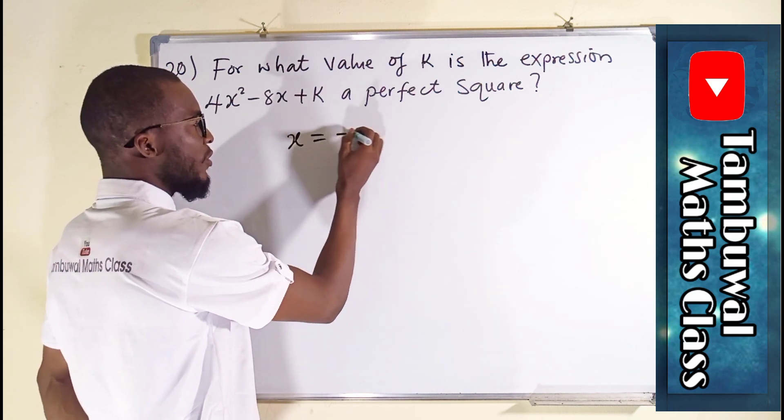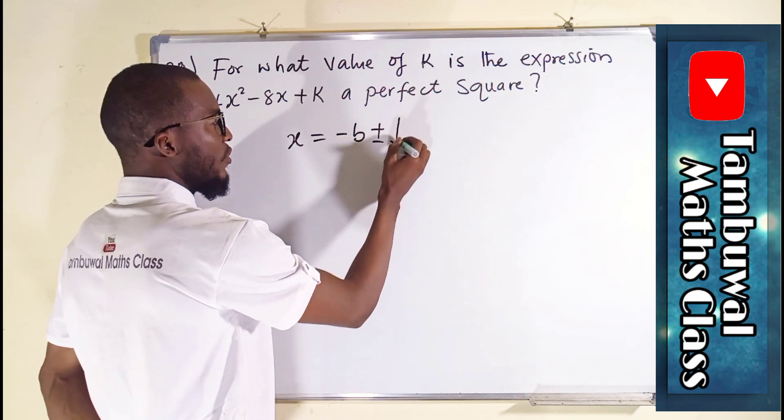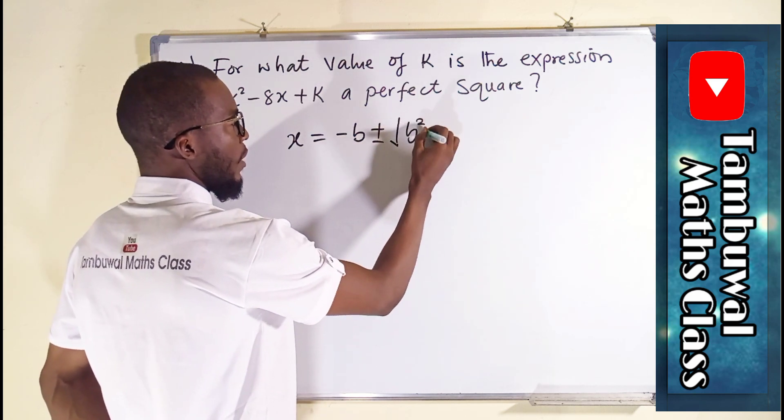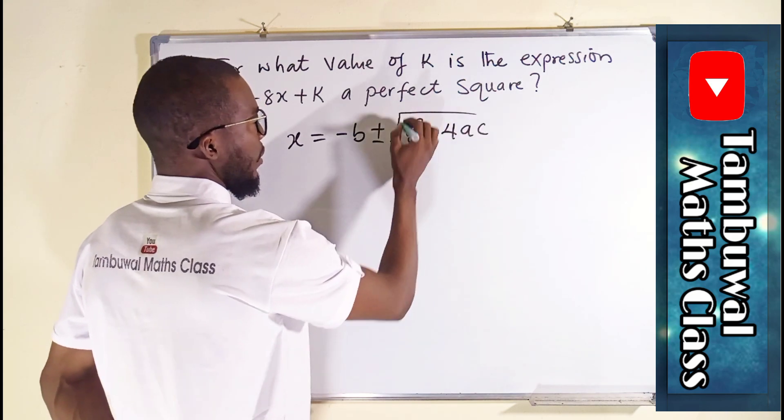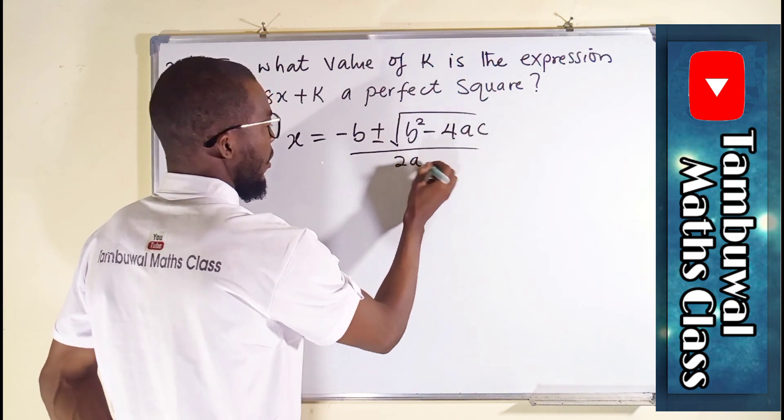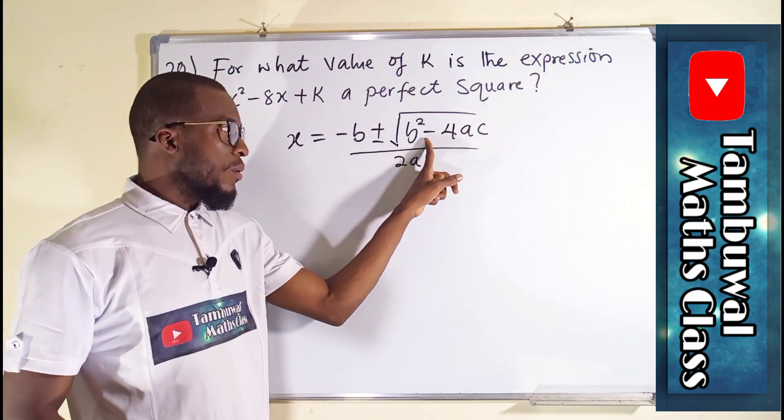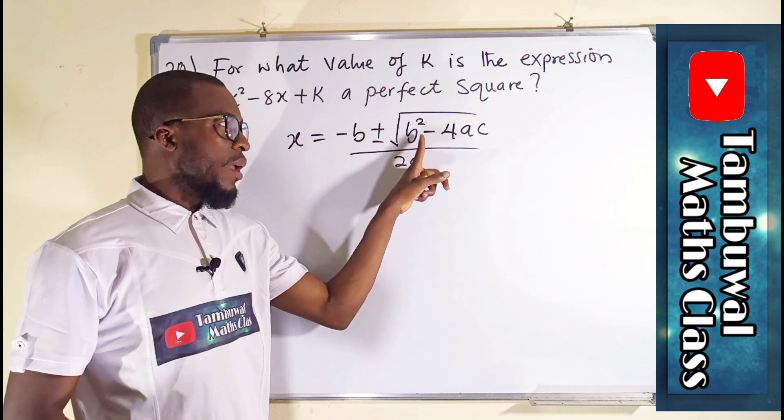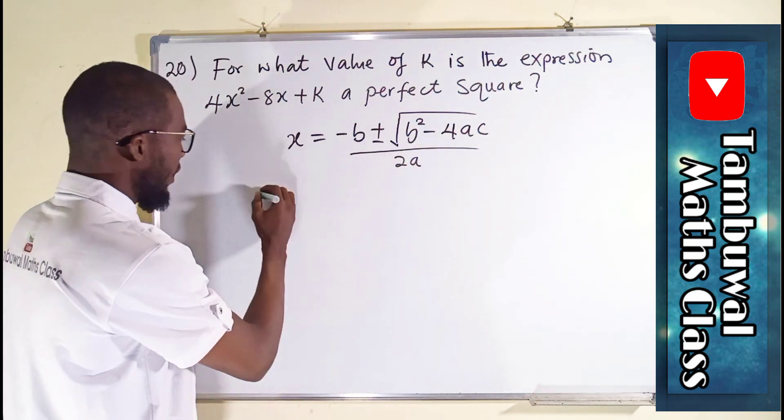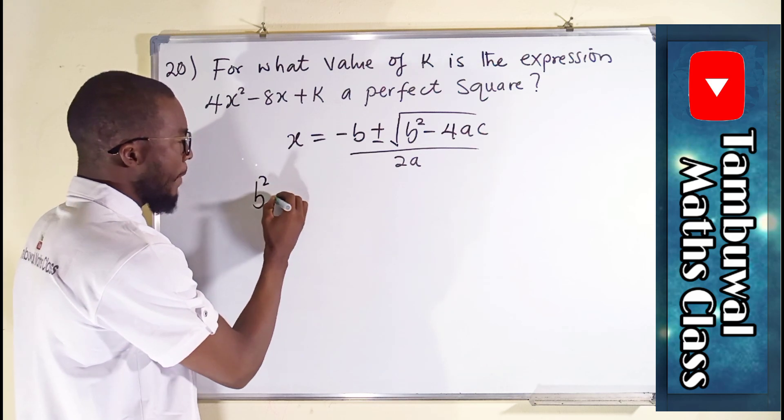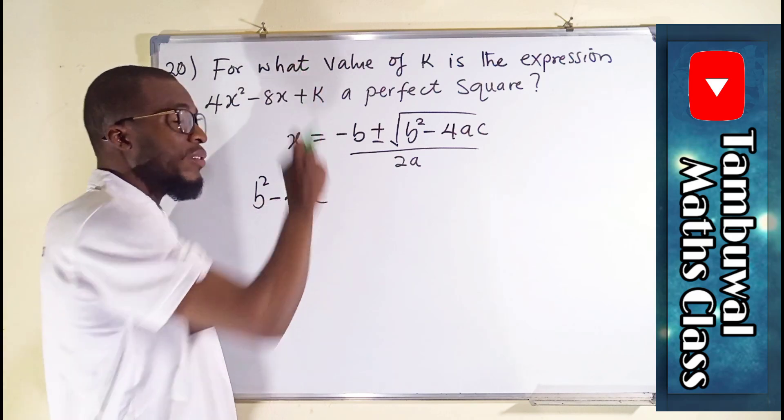x equal to minus b plus or minus into the square root of b squared minus 4ac divided by 2a. You see this value under that square root, which is b squared minus 4ac, is very important in solving this type of question.